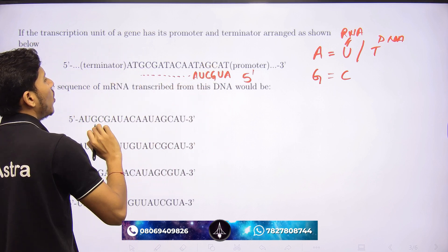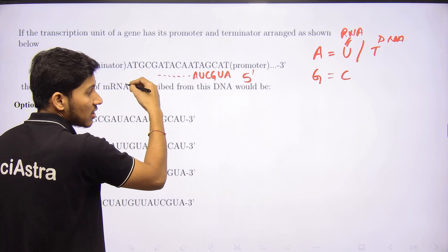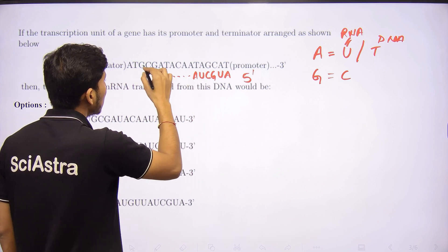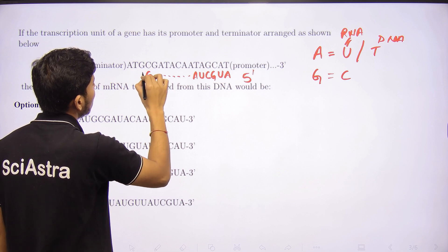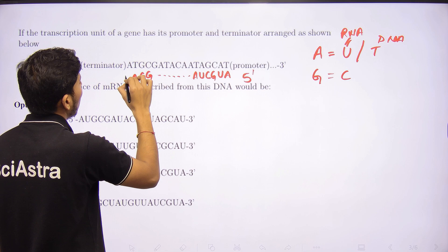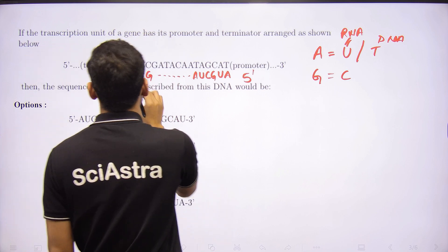C to G, G to C, T to A, and A to U. So this is the 3' end here, this is the antiparallel strand.